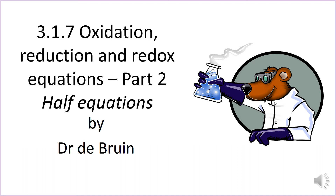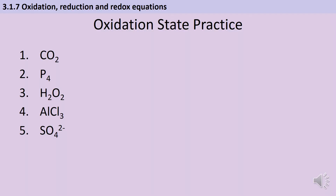This video is the second in an A-level chemistry series about redox equations. We're going to recap oxidation states and then look at how you write half equations. The first video in this series explained how to derive the oxidation state of the different elements in a compound, so just pause the video and make sure that you're confident doing this before we go any further.